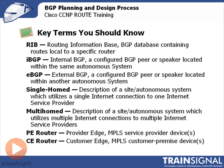Single-homed is a description of a CIDR autonomous system which uses a single connection to the internet with one internet service provider. Multi-homed is a description of a CIDR autonomous system which utilizes multiple internet connections and possibly multiple internet service providers.